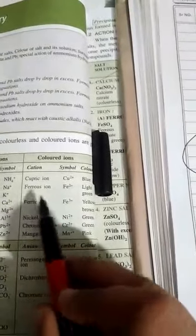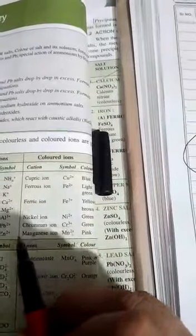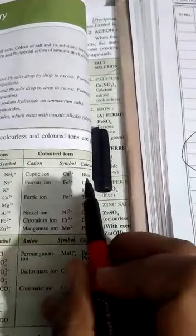You have metallic ions like cupric, ferrous, ferric, nickel, chromium, manganese - these all have their particular colors. By looking at the color of the salt we can judge whether cupric, ferric, or nickel is present. Similarly, we have anions that are colorless and those that are colored. These you have to learn.